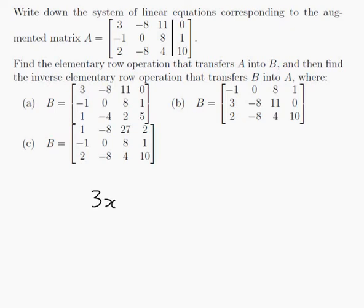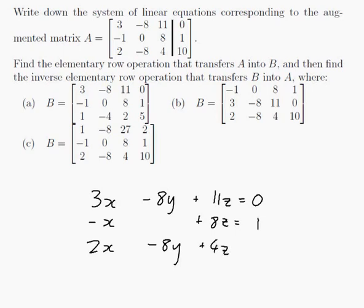So 3X minus 8Y plus 11Z is equal to 0. That's the first row. The second row is minus X plus 0Y plus 8Z is equal to 1. And the next row would be 2X minus 8Y plus 4Z is equal to 10. So that's the system of linear equations that this augmented matrix corresponds to.